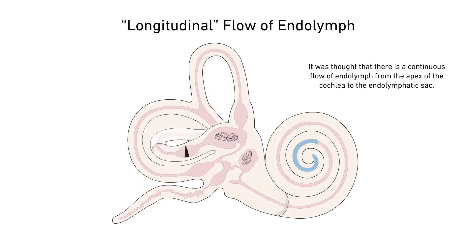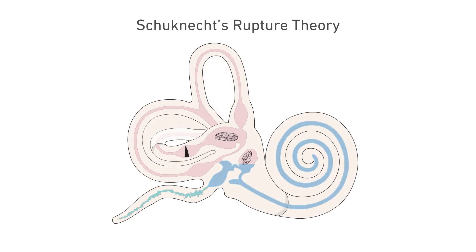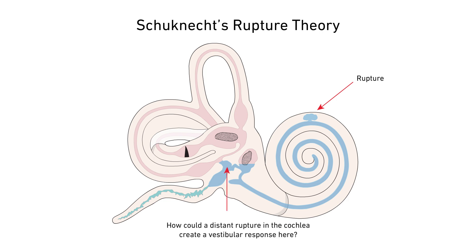It was thought that there is a continuous flow of endolymph from the apex of the cochlea towards the endolymphatic sac. Since the 1960s, the predominant theory for the mechanism of Meniere's vertigo attacks has been Schucknecht's rupture theory. A rupture of Reissner's membrane in the cochlea results in potassium intoxication of the perilymph. It seems unlikely that such a distant event could cause an effect on the vestibular side.